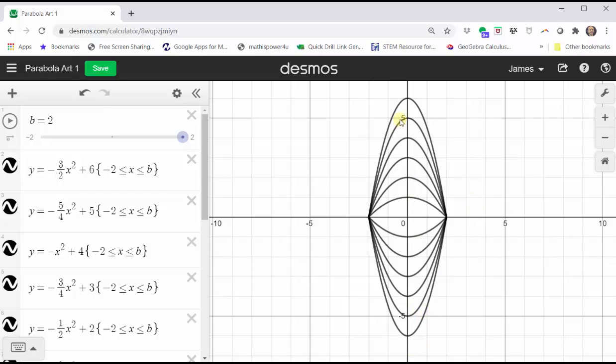Notice how it's fairly simple. We have symmetry across the x and y-axes, but this was created by graphing 12 quadratic equations with domain restrictions.